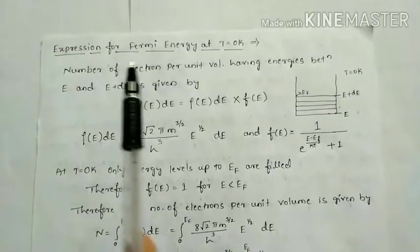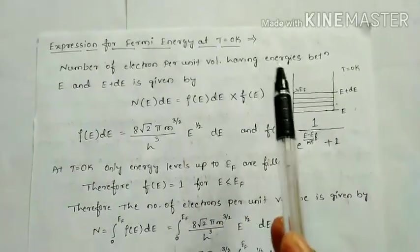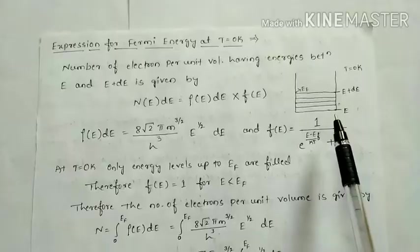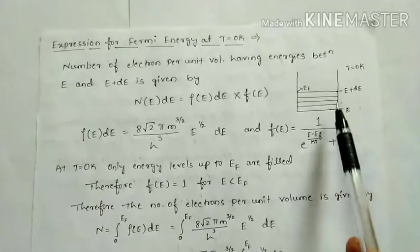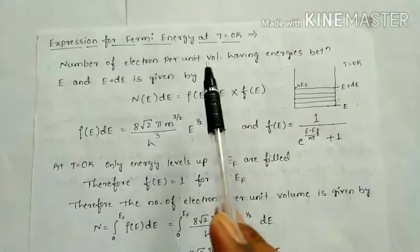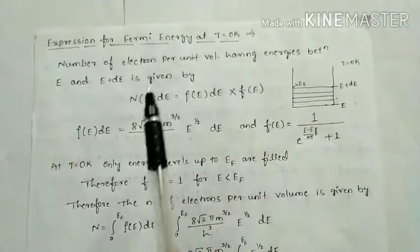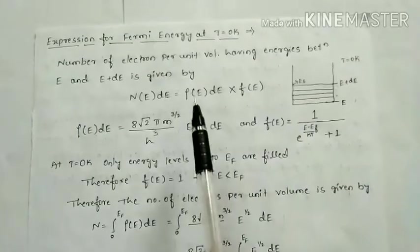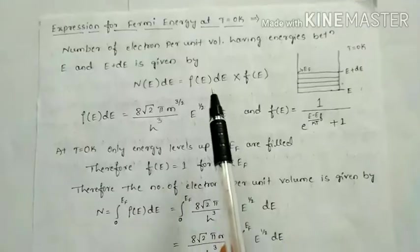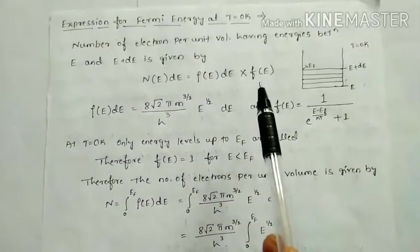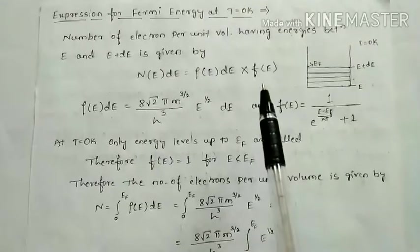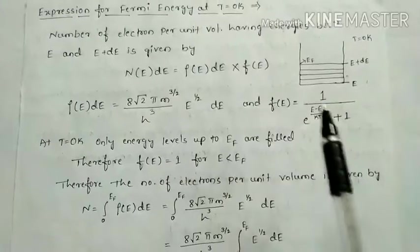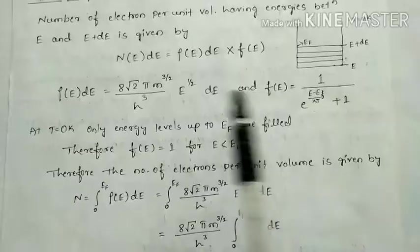The number of electrons per unit volume having energies between E and E plus dE is given by: our energy ranges from E to E plus dE. In this energy range, the number of electrons per unit volume is N(E)dE = ρ(E)dE × F(E), where ρ(E) is the density of states we just discussed, and F(E) is the Fermi factor — the probability of getting an electron.